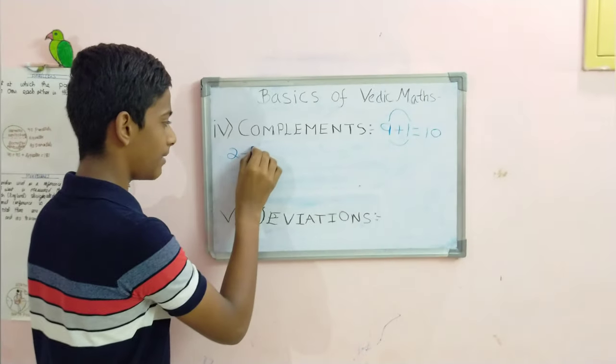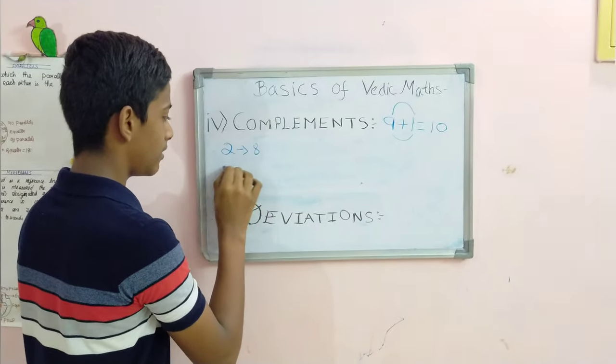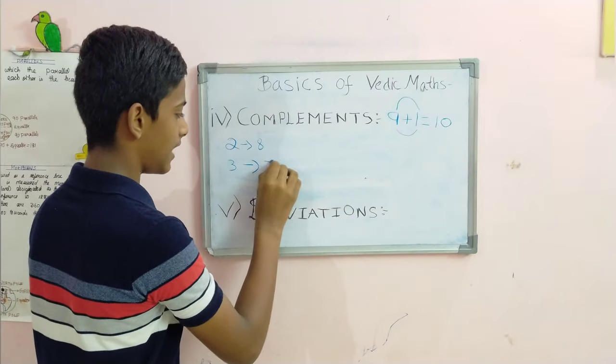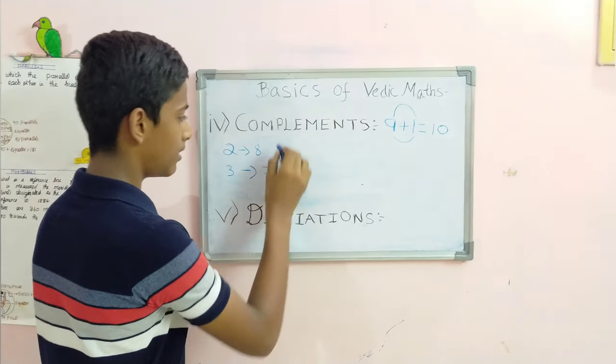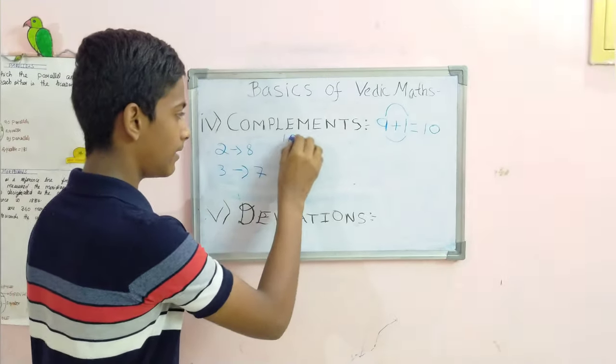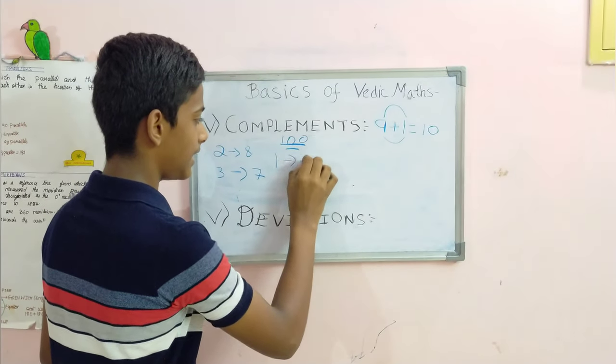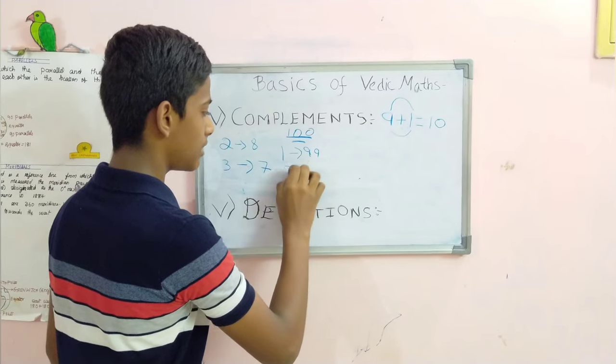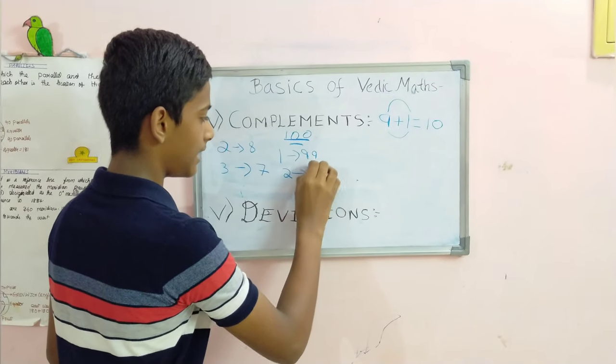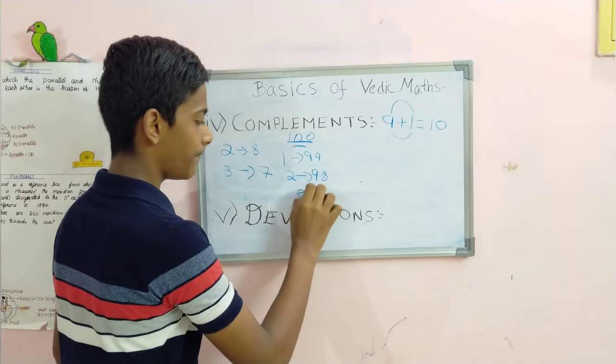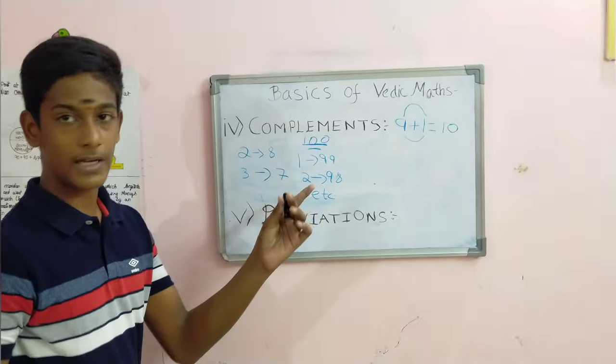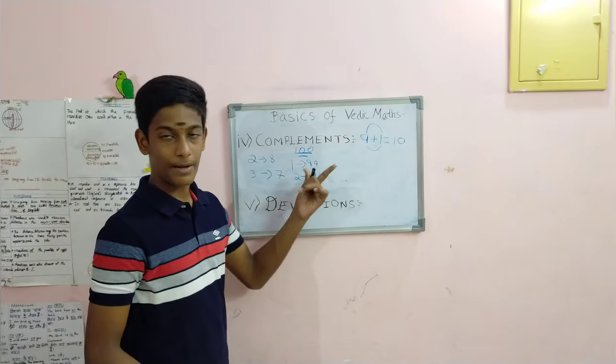Similarly, 2 is the complement of 8, 3 is the complement of 7, and so on. For 100, 1 is the complement of 99, 2 is the complement of 98, etc. Similarly, it applies for all the primary base numbers.